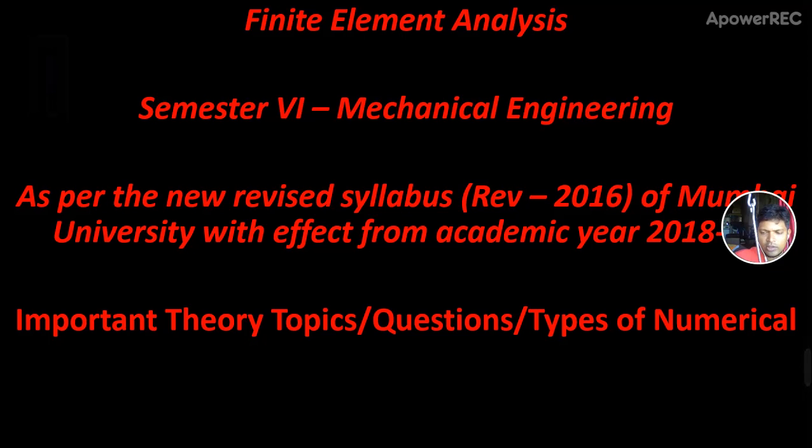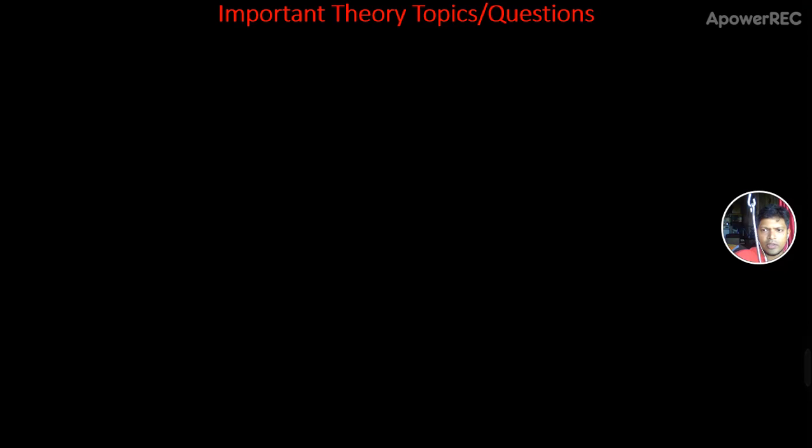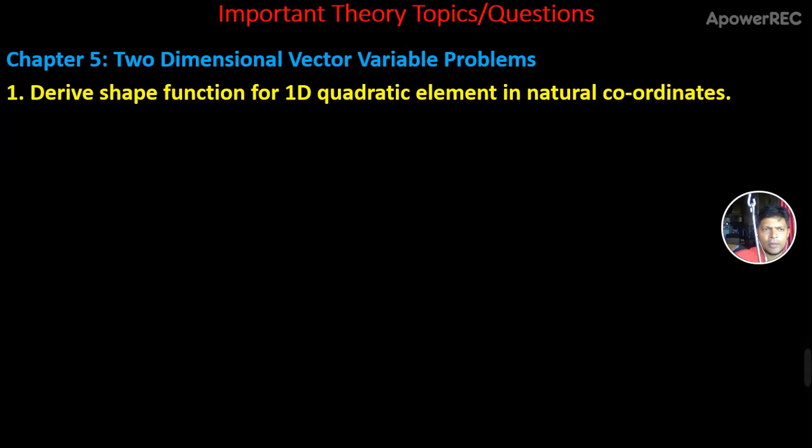First, we'll start with important theory topics or questions. For Chapter 5, Two-Dimensional Vector Variable Problems, the first question is: Derive shape function for 1D quadratic element in natural coordinates.